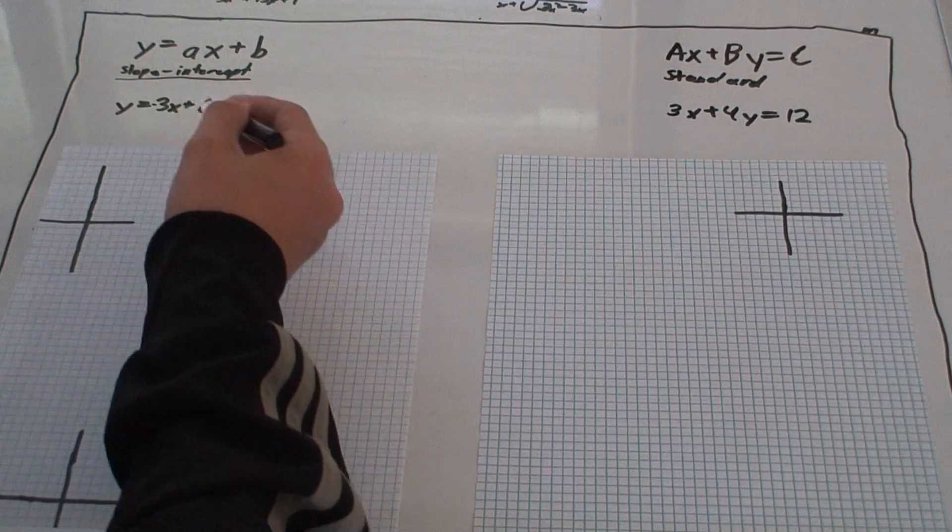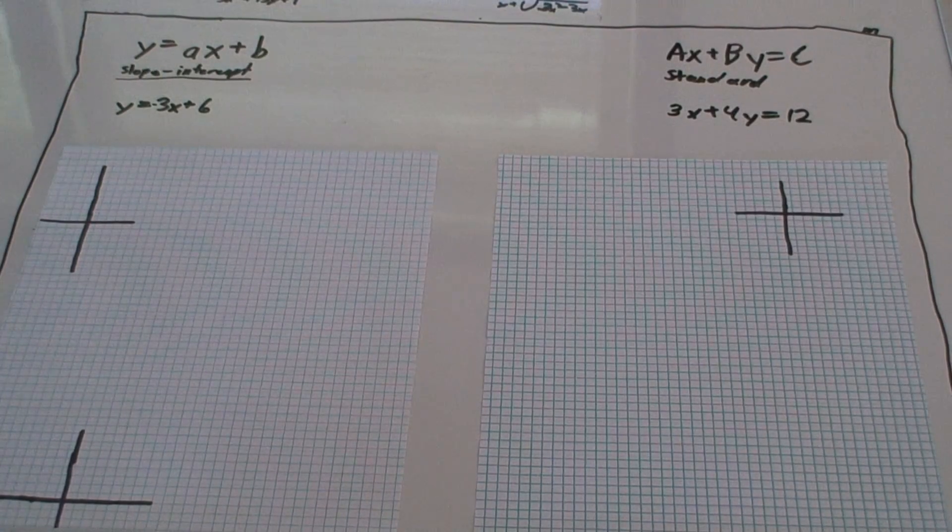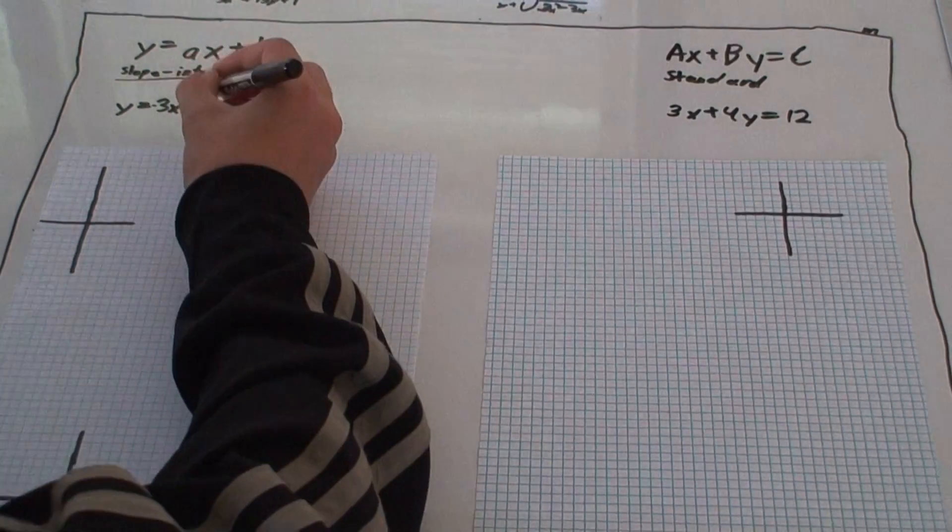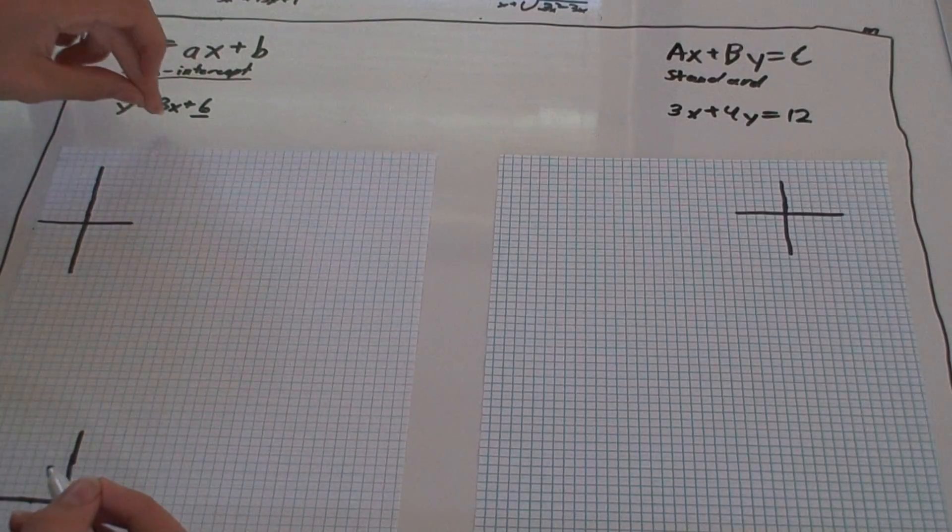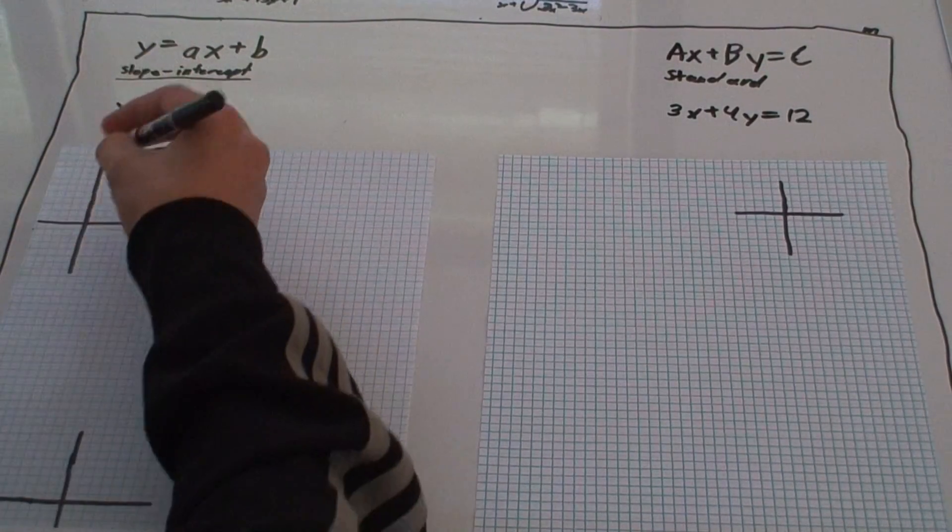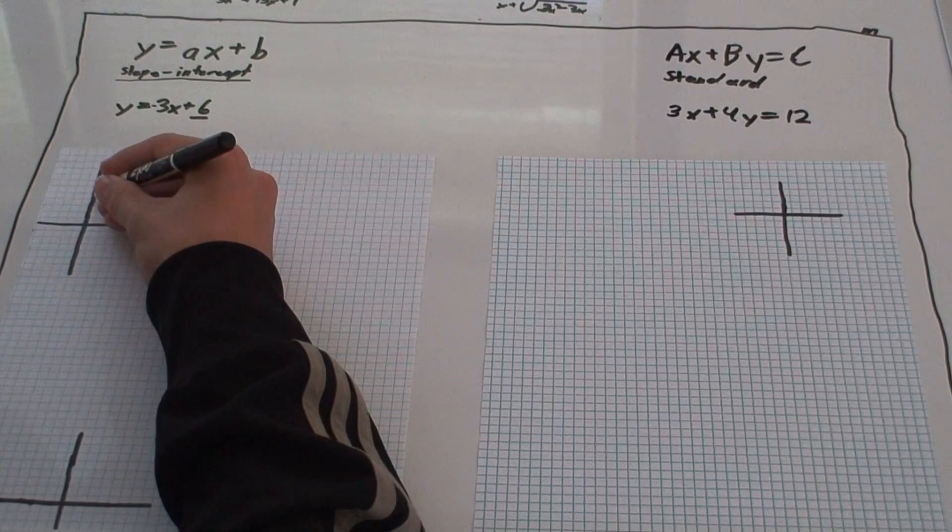So, say if we have y is negative 3x plus 6, we can immediately know that this is our intercept because when x is 0, we get a positive 6. So, if we take that on this graph, 1, 2, 3, 4, 5, 6, there's our y-intercept.